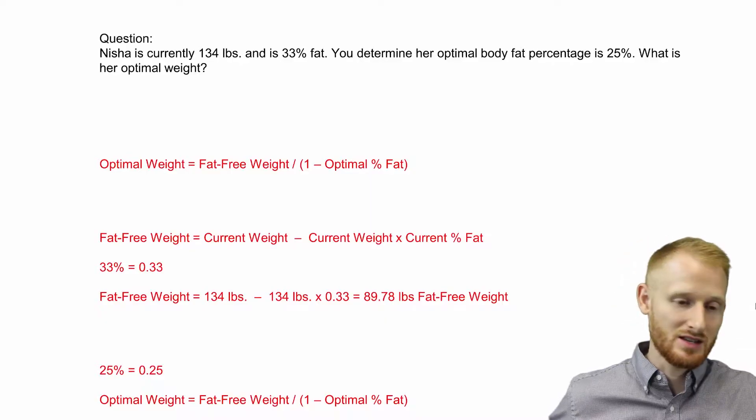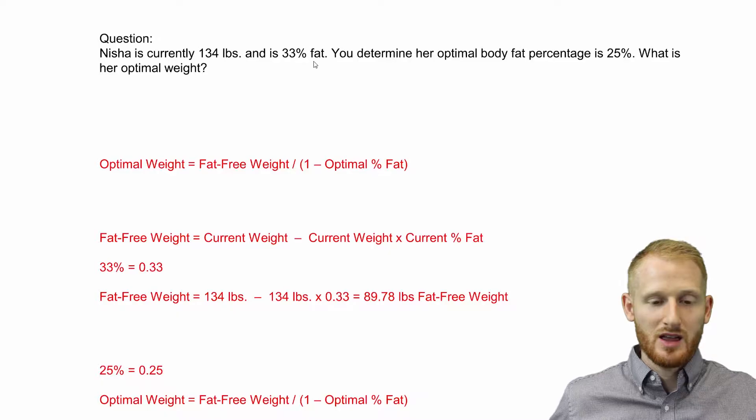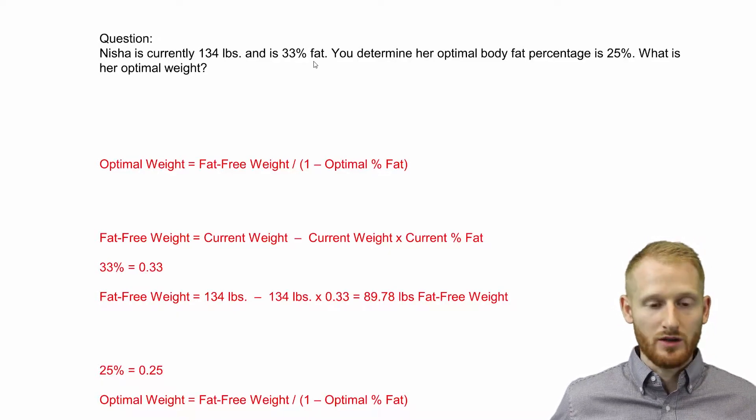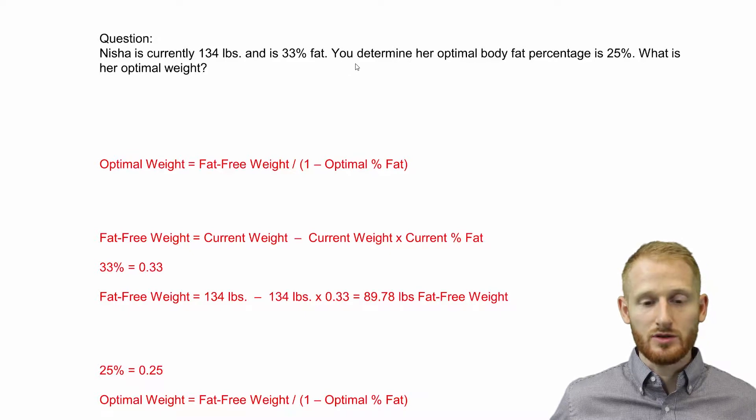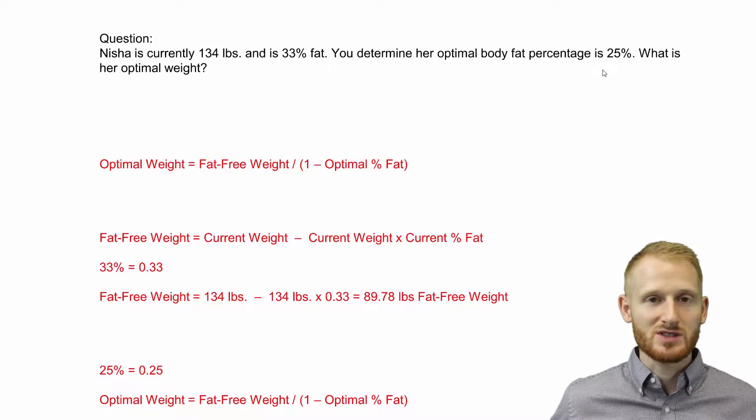Nisha is currently 134 pounds and is 33% body fat. You, as her trainer or fitness professional, have helped her determine that her optimal body fat percentage is 25%. Now this is something that's different depending on the person.